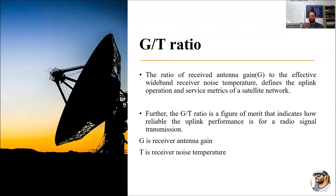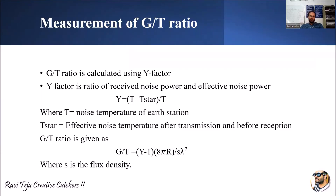G is the receiver antenna gain and T is the receiver noise temperature. Based on this ratio we see how reliable it is. The G/T ratio is calculated using a Y factor. Y factor is the ratio of received noise power and effective noise power. We need to remember that whenever transmitting or receiving a signal, there will be power involved. G/T ratio is also calculated with respect to the Y factor: Y is the ratio based on received noise power and effective noise power.